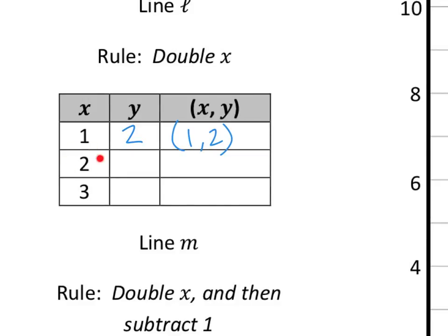What about when x is 2? Well, we would double it, so that would mean 4, and then a coordinate pair of 2, 4. All right, what if x were 3? Well, we'd double that, that would make 6, and we'd end up with a coordinate pair of 3, 6.